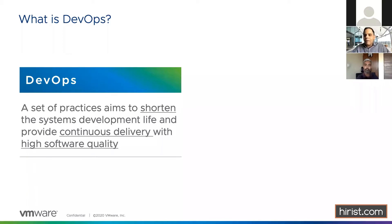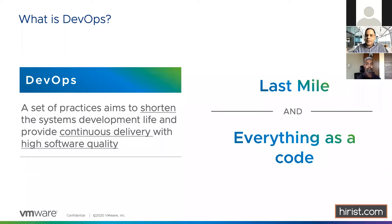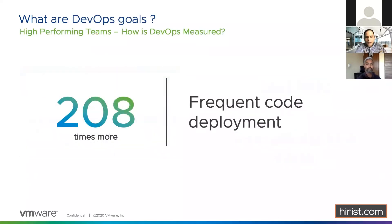DevOps brings dev and ops together as a culture to deliver — everything is treated as an engineering problem. What it's primarily trying to solve is what we call the 'last mile': once developer code is checked in, the time it takes to be integrated, tested, deployed, and released into production. The objective of a DevOps construct is to reduce or eliminate that last mile, treating everything as code.